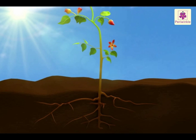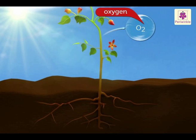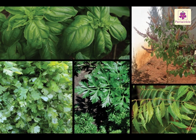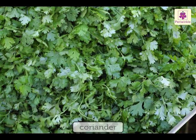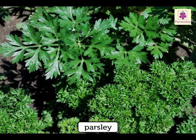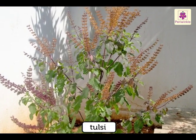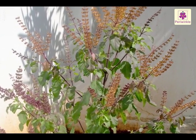As plants prepare their food, they also produce oxygen, which is released into the air. There are a few leaves which we can eat raw, like basil, coriander, parsley, etc. Neem leaves and tulsi leaves are used to kill bacteria and germs.